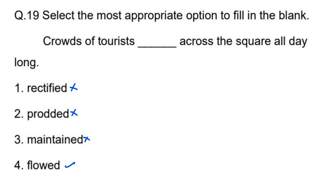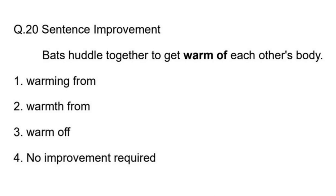In the cloze test passage, 'crowds of tourists float across the square' — the word 'float' fits here describing movement. The passage also involves getting warmth from each other's body. The answer relates to a unique quality or characteristic.